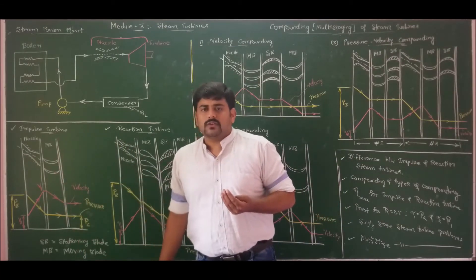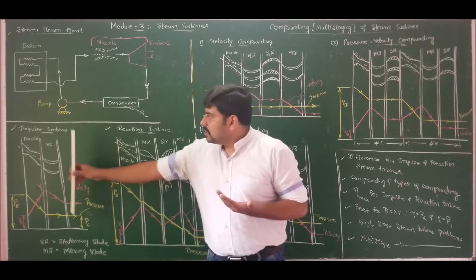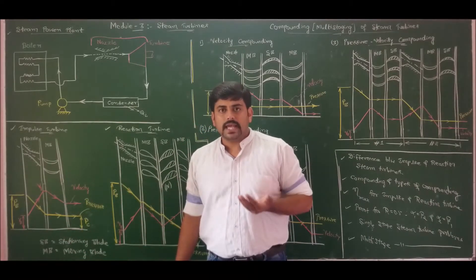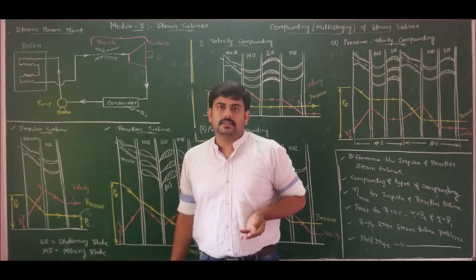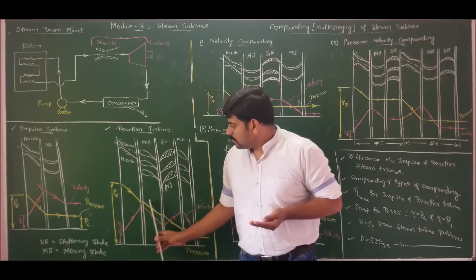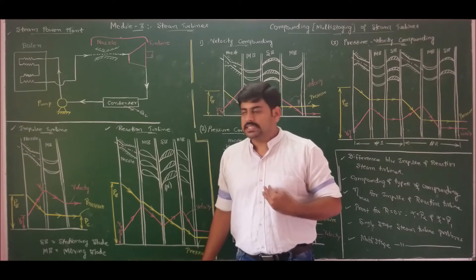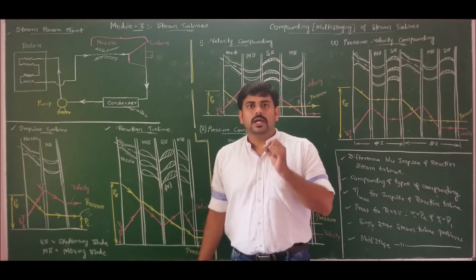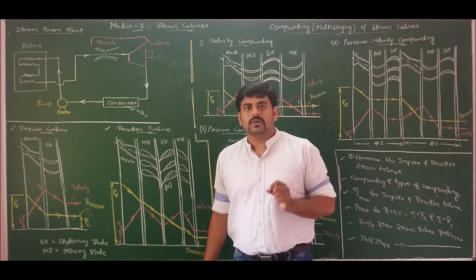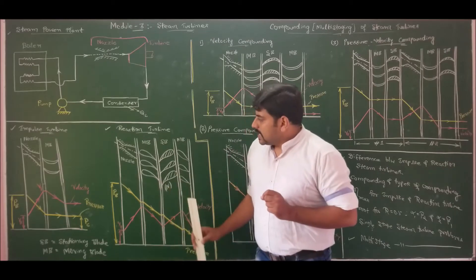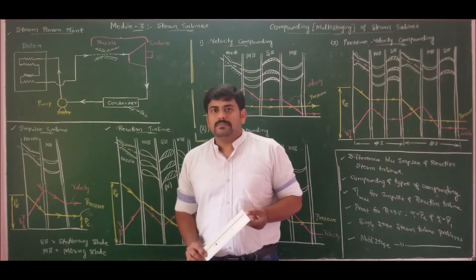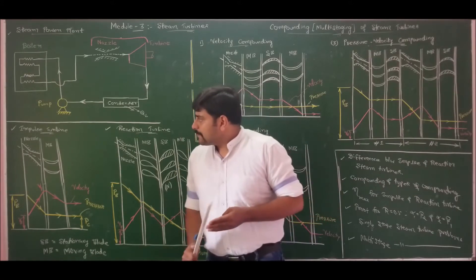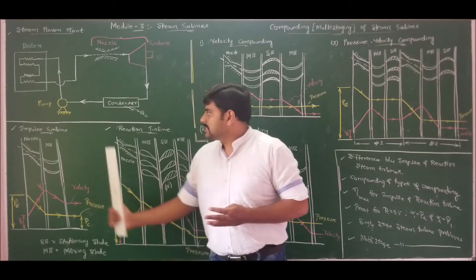Fifth difference — energy supplied: for impulse turbine, energy supplied is given only by the kinetic energy of steam at inlet, that is V1 squared divided by 2gc. Whereas in reaction turbine, since pressure drop is observed both in the nozzle and in the moving blade, energy supplied per kg is V1 squared over 2gc plus (Vr2 squared minus Vr1 squared) over 2gc, which confirms Vr1 is not equal to Vr2 for reaction turbine. Sixth, efficiency of impulse turbine is comparatively less whereas efficiency of reaction turbine is higher. These are the major differences between impulse and reaction turbines.